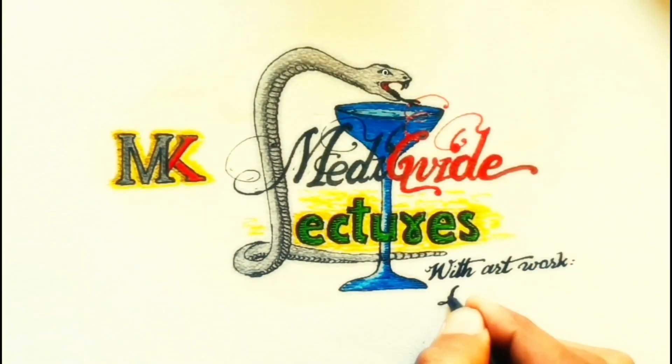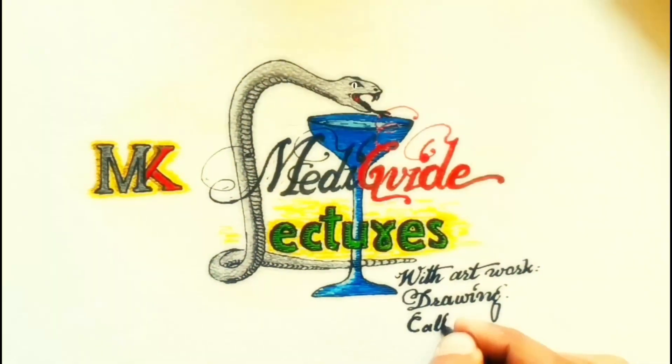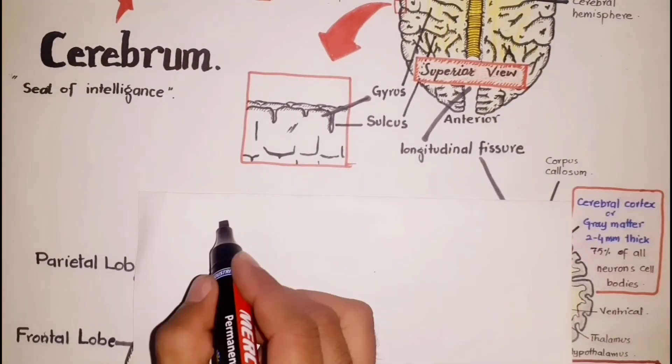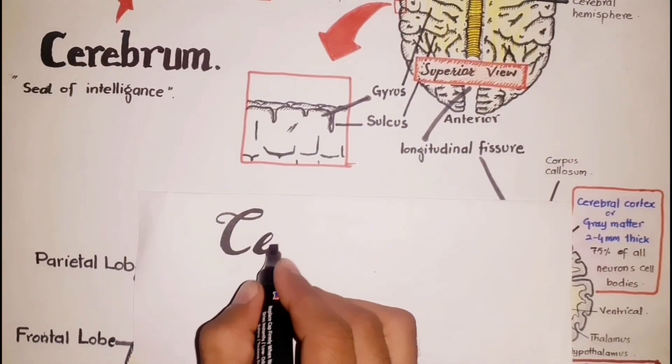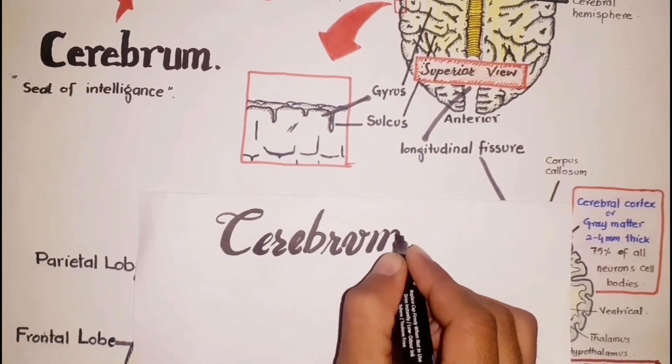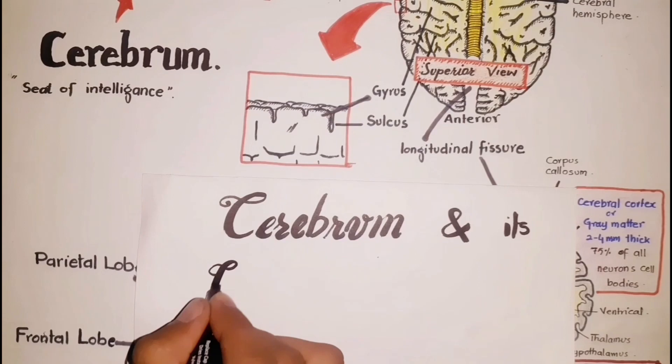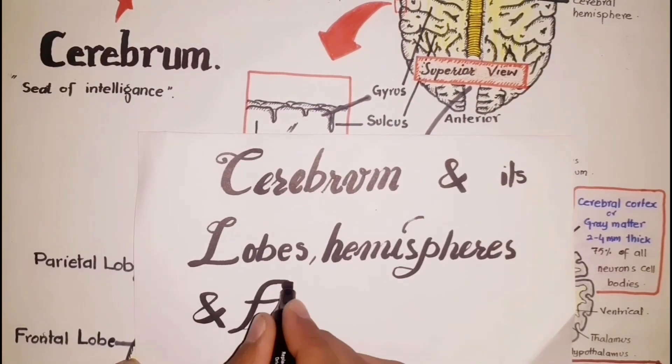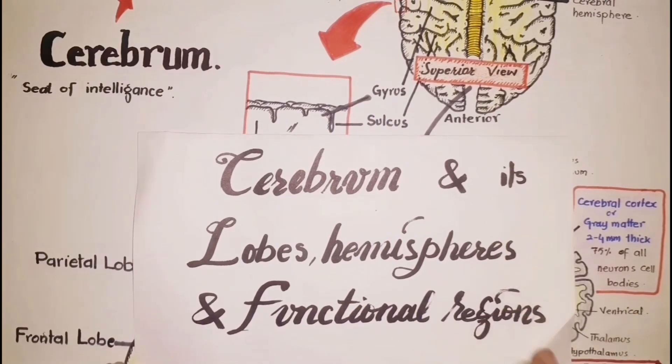Welcome to my channel MK MediGuide lectures, learning with artworks like drawing and calligraphy. In this video lecture we will discuss the anatomical and physiological divisions of the cerebrum, its lobes, cerebral hemispheres, and functional regions of the cerebrum.